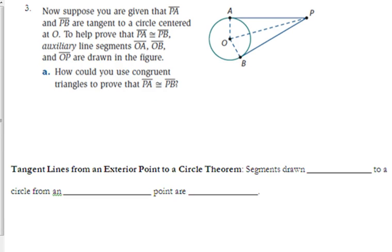There's another property about tangent lines we need to know. So they give us another figure. PA and PB are tangents to a circle centered at O. So as soon as we read that, we need to put in right angles at A and B because it says that those are tangent. It says to help prove that PA is congruent to PB, auxiliary line segments OA, OB, and OP are drawn in the figure.